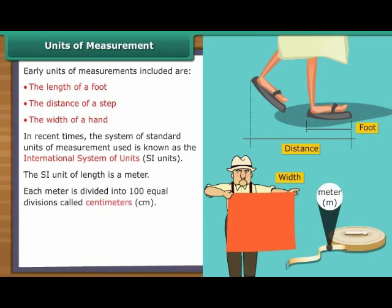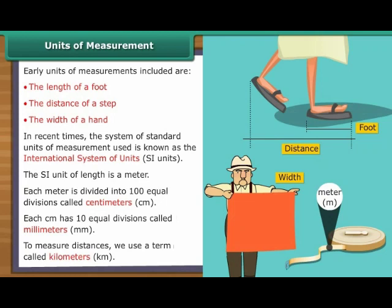Each metre is divided into 100 equal divisions. These are called centimetres or CM. Each centimetre has 10 equal divisions. These divisions are called millimetres or MM. To measure distances, we use a term called kilometres or KM.